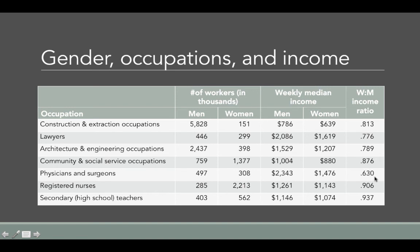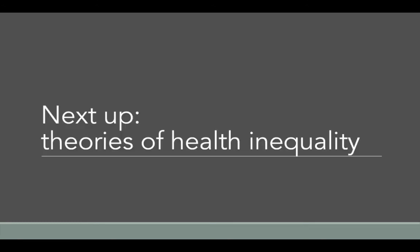That's a basic rundown of what stratification looks like in the U.S. The book does a pretty good job of explaining what health profiles look like for these groups and by age, so I'll let the book and readings speak for themselves. We'll focus in the next lecture on the theories of health and inequality discussed in the readings this week.